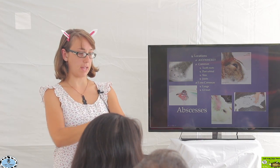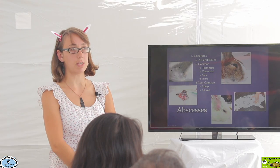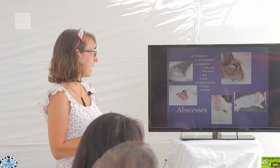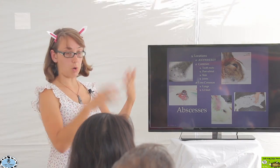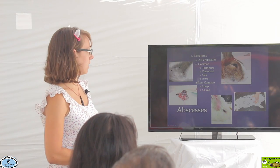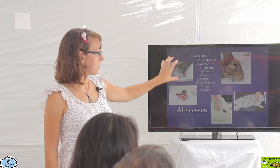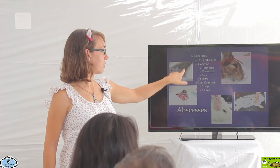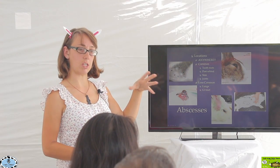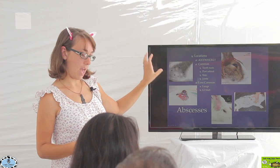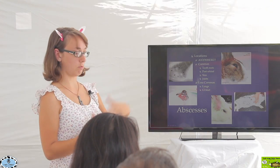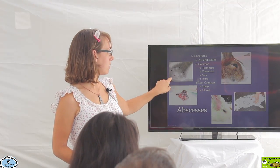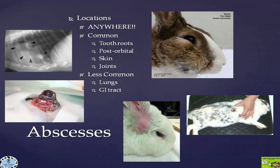Skin abscesses — little abscesses at different locations on the skin — can happen from rabbits that get into a fight. Joints are another common location where we see abscesses. Less common locations include the lungs. In this x-ray of a rabbit's chest, there's a lot of black in the back — on x-rays, anything black is gas. In the lungs you should see a lot of black, but in this particular x-ray we're seeing a lot of white, which indicates an abscess accumulating within the chest.